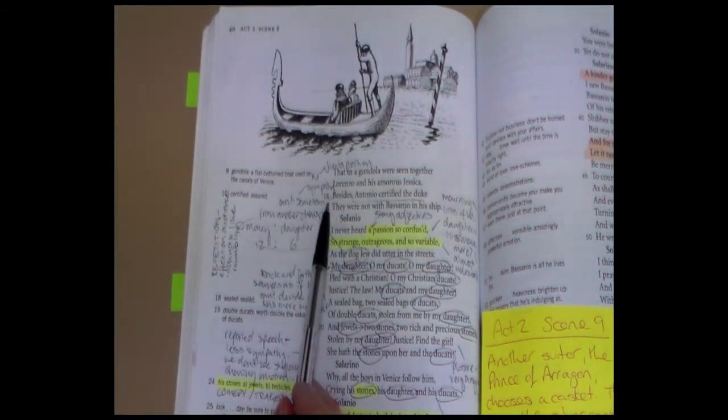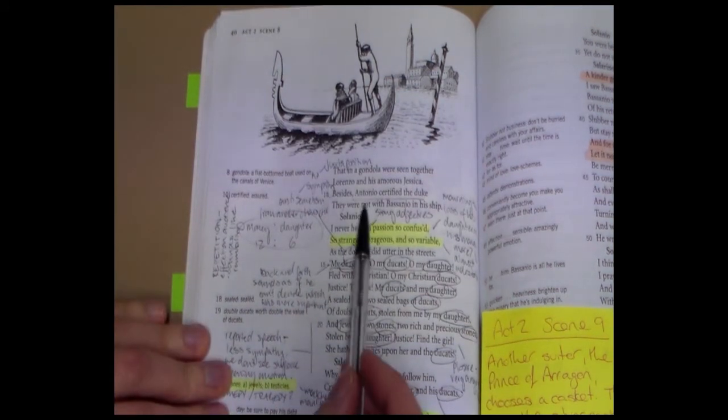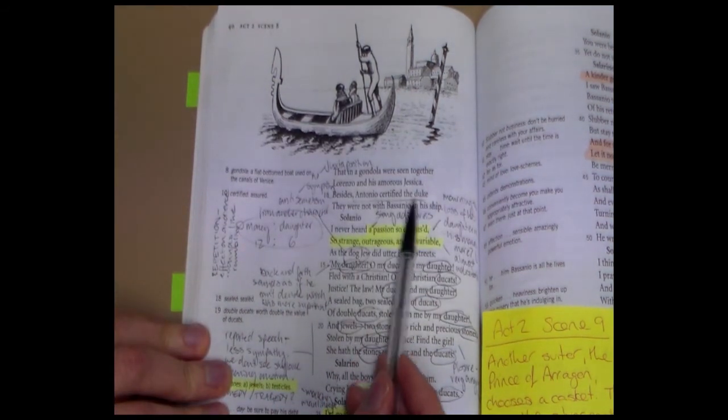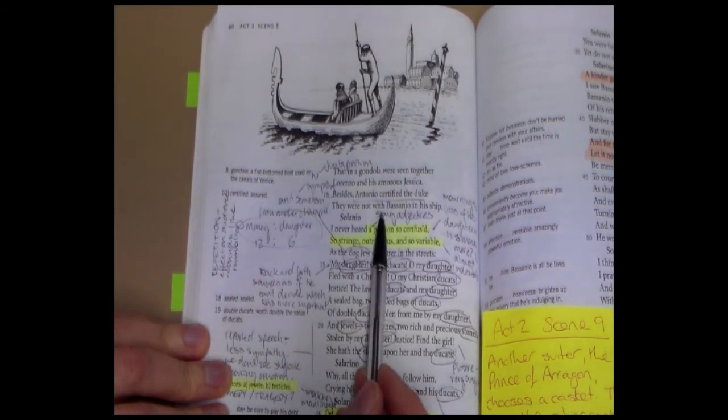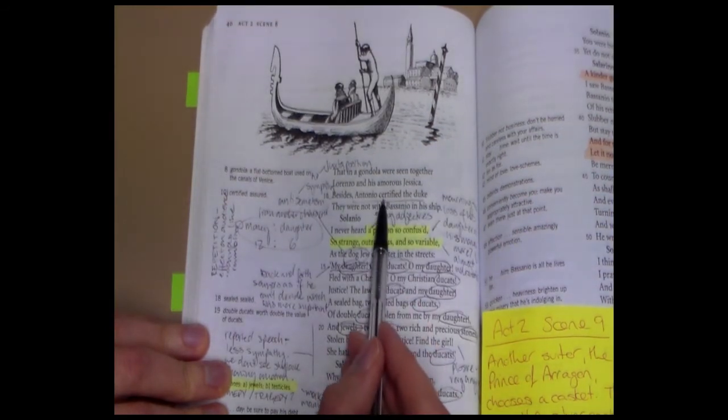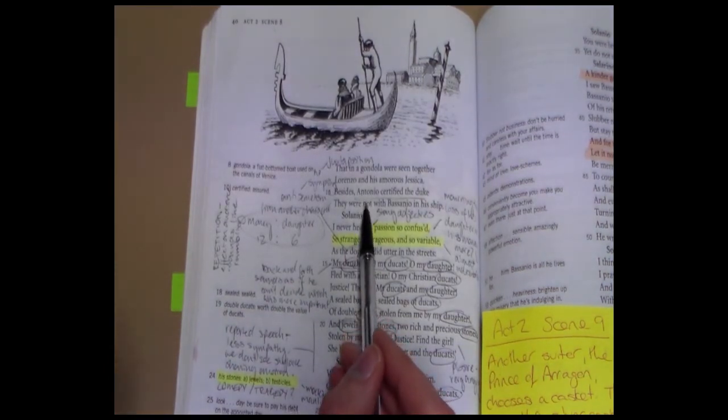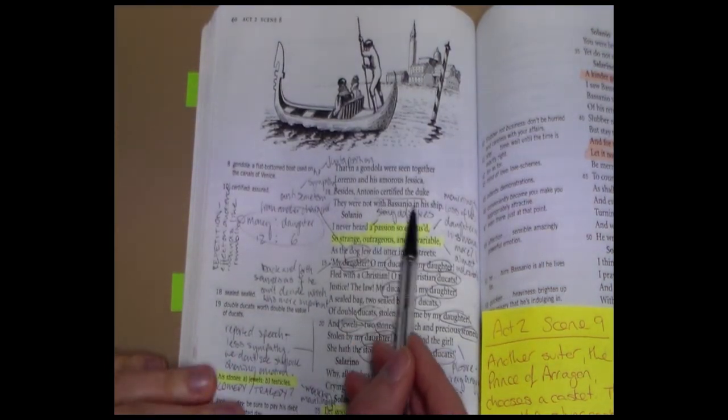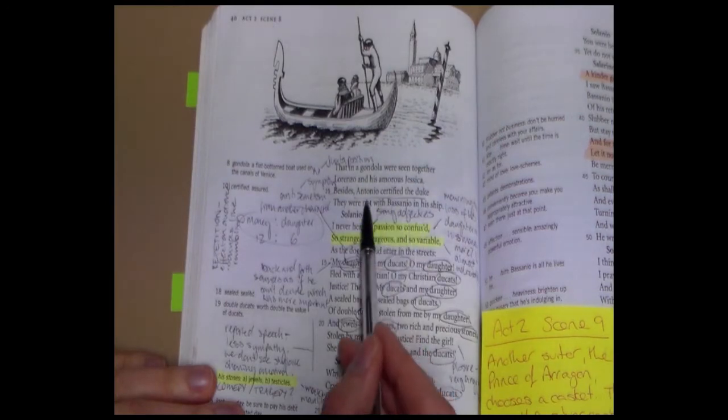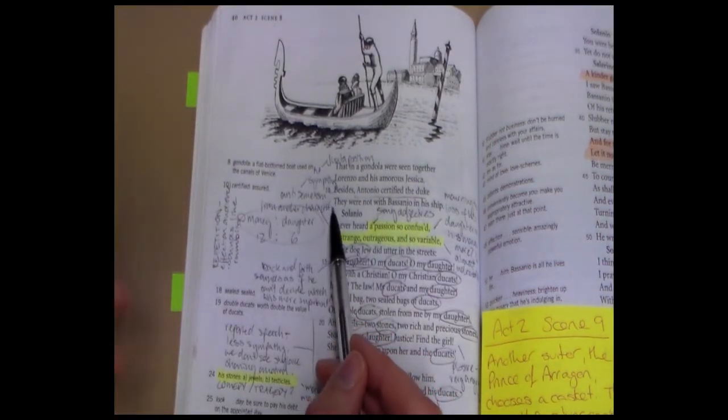Now the discussion begins with Salarino and Solanio talking about the movement of Bassanio over to Belmont, and then the loss of Jessica. So Lorenzo and his amorous, his love, Jessica. Now it seems that Shylock has been searching for his daughter, and he believed that his daughter was on the boat with Bassanio, but Antonio certified the Duke they were not with Bassanio in his ship. This is an example where we get to see that Antonio's word is good for anything he puts it to. So because Antonio said that Jessica was not on the ship with Bassanio, everybody has absolutely believed him.